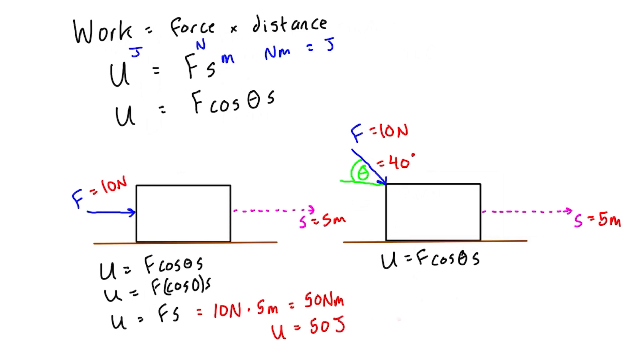In the next case, U equals F cos theta S, where cos theta is not equal to 1. So we have 10 newtons times cos of 40 times 5 meters, which gives us 38.3 newton-meters or 38.3 joules.